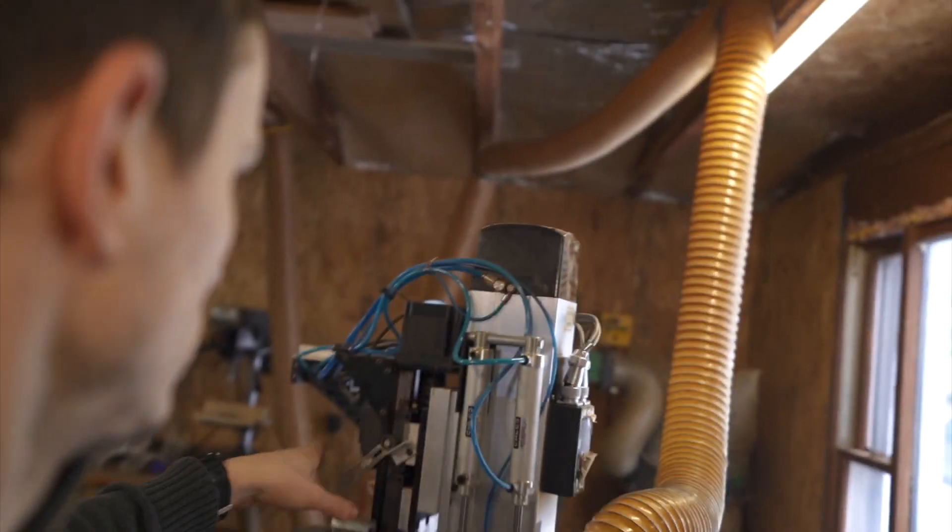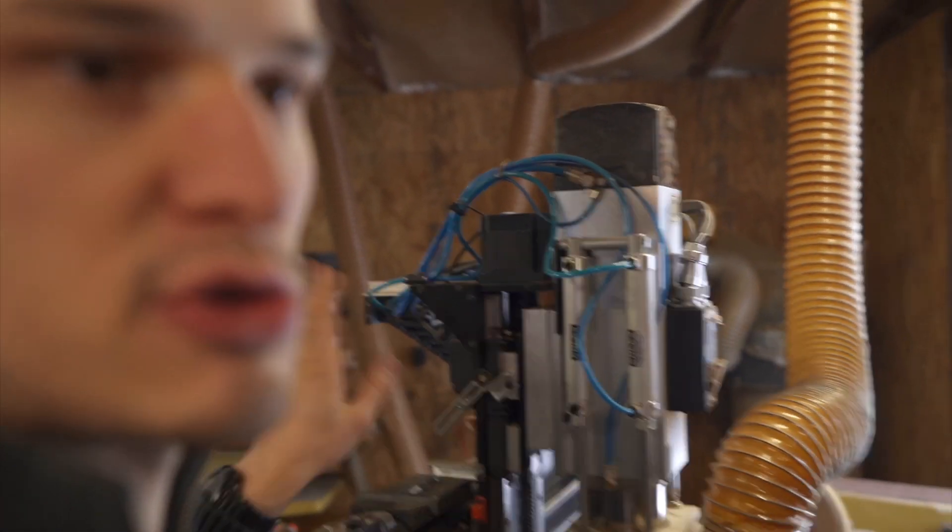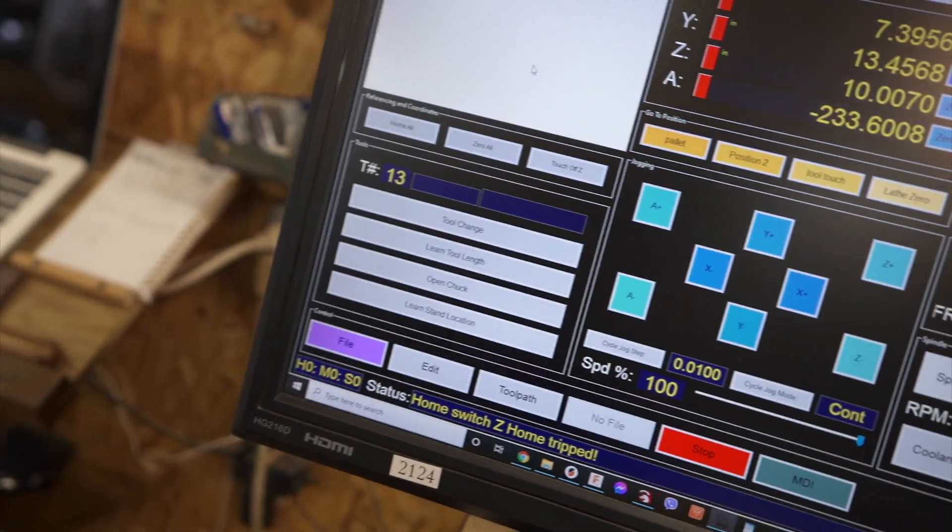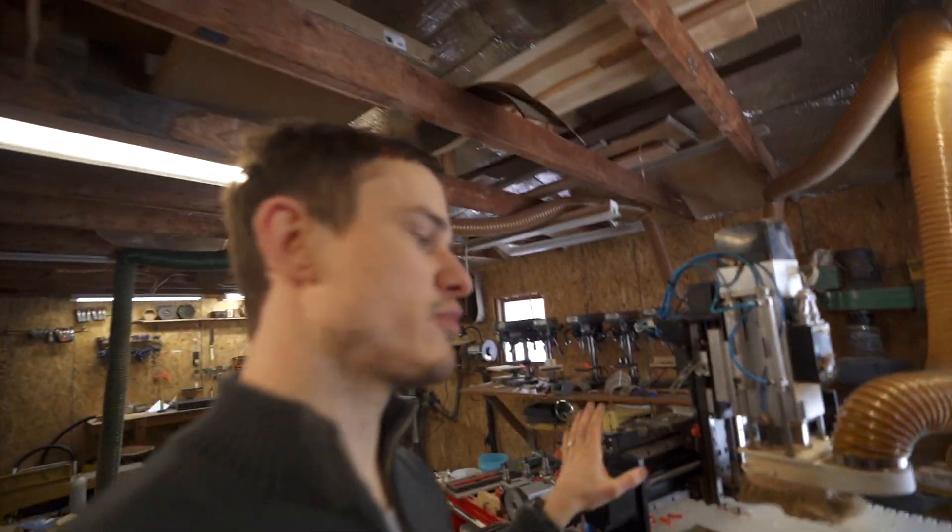I just make sure the flag switch is tripped, and I move it to wherever I reference home off of. And then I hit home all, and now my machine is perfectly homed. That's super important.